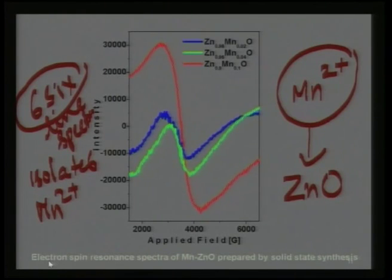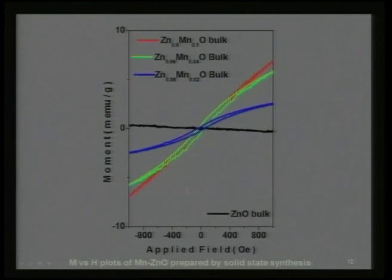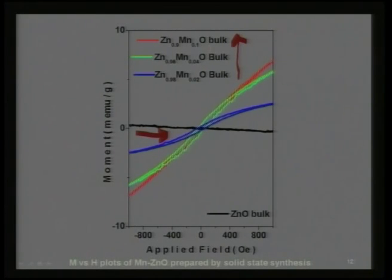There is a limitation in the solid state approach: you are effectively able to grow or substitute manganese in the system, yet the compound suffers from manganese–manganese interaction. The magnetic property is limited by this Mn2+–Mn2+ interaction — ZnO bulk is non-magnetic and shows no loop, but with increasing concentration from 2% to 4% to 10% manganese you see the moment increasing, indicating the magnetic property comes from Mn–Mn interaction rather than a purely doped situation.